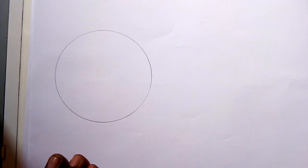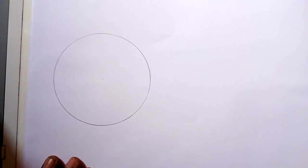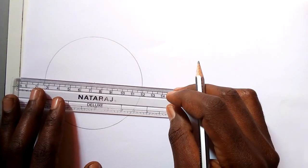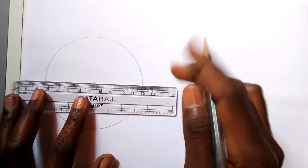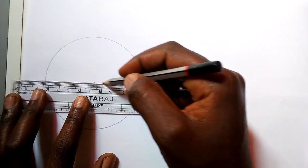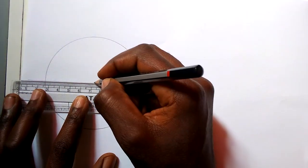After getting the circle, then I draw the line which cuts it in the center. Or you can see, you can draw a line across its diameter.